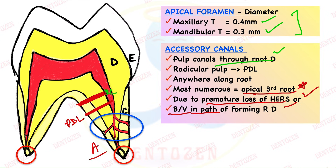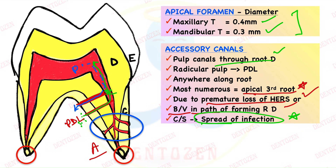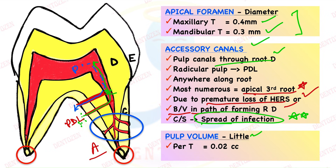What is their clinical significance? If there is any infection of the pulp, it can travel through these canals to the PDL, and if there is any infection in the PDL, it can travel through these canals into the pulp. So accessory canals have an important role in the spread of infection. The volume of pulp is 0.02 cc per tooth; all teeth combined it is 0.38 cc.